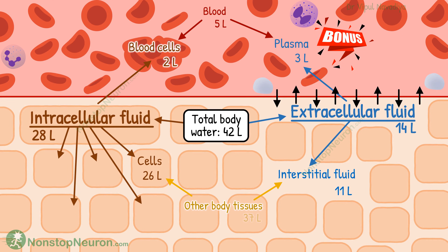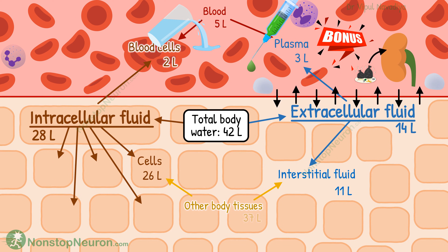As a bonus point: among all these fluids, plasma is the main medium for all kinds of exchanges between compartments. When you drink water, its absorption adds it to the plasma first, and from there it is distributed throughout the body. Similarly, the kidneys collect waste products from the plasma, and drugs given by intravenous route also enter the plasma first.